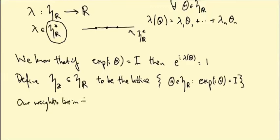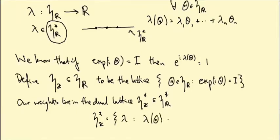And now we know that our weights live in the dual lattice, which I'll write as H_Z^* inside little H_R^*, where this is defined to be the set of lambdas such that lambda(theta) is 2pi times an integer - because what's supposed to be is e^{i*lambda(theta)} equals one, so this needs to be 2pi times an integer whenever theta is in H_Z.